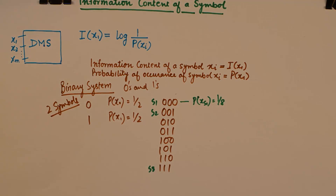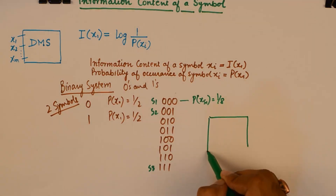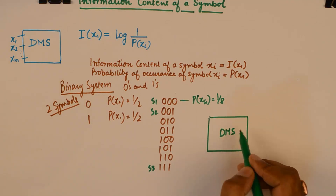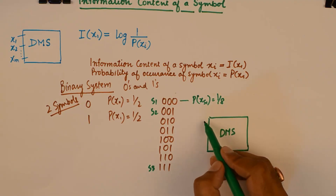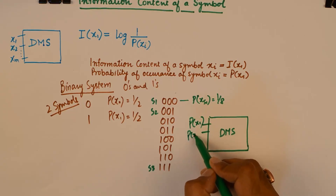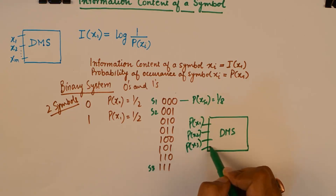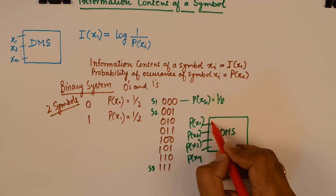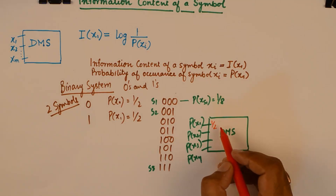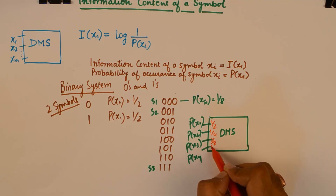That is the essence of this formula: the information content of a message having higher probability of occurrence is less than that of a message having low probability of occurrence. I will take a numerical example where a DMS produces four symbols. The probabilities are: P(X1) = 1/2, P(X2) = 1/4, P(X3) = 1/8, and P(X4) = 1/8.